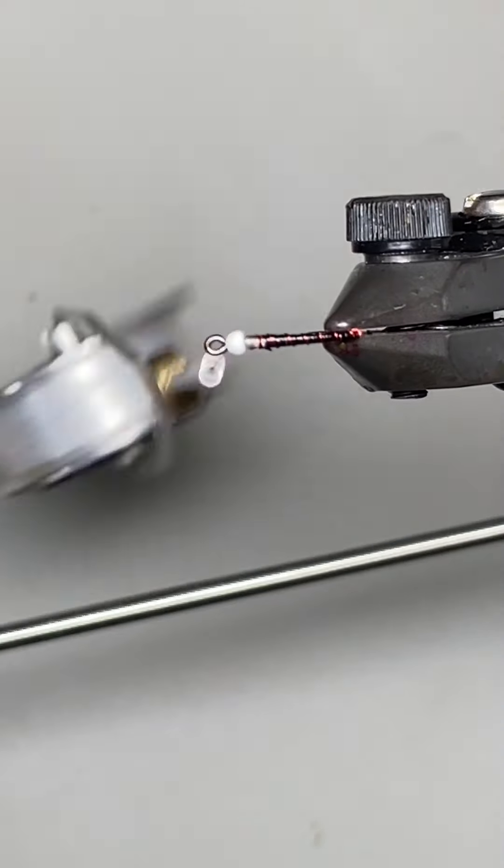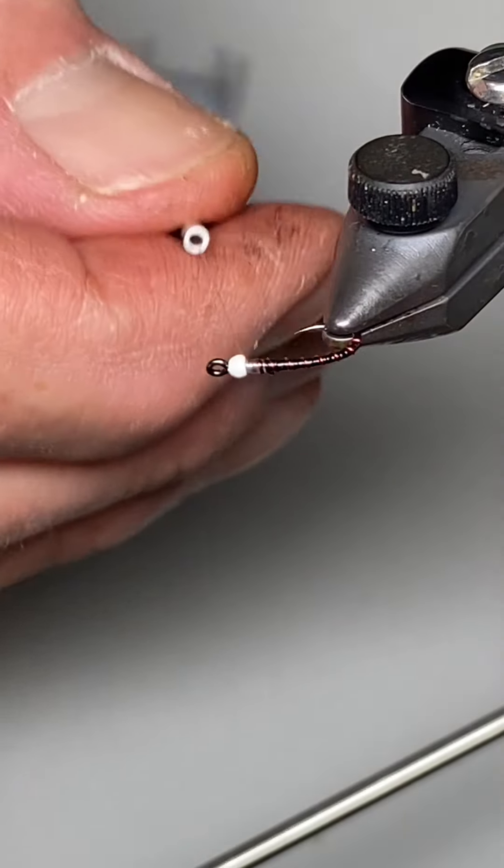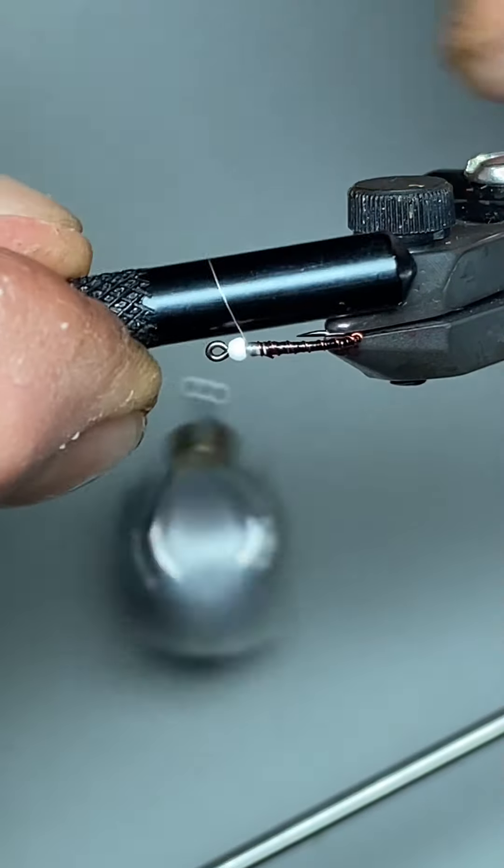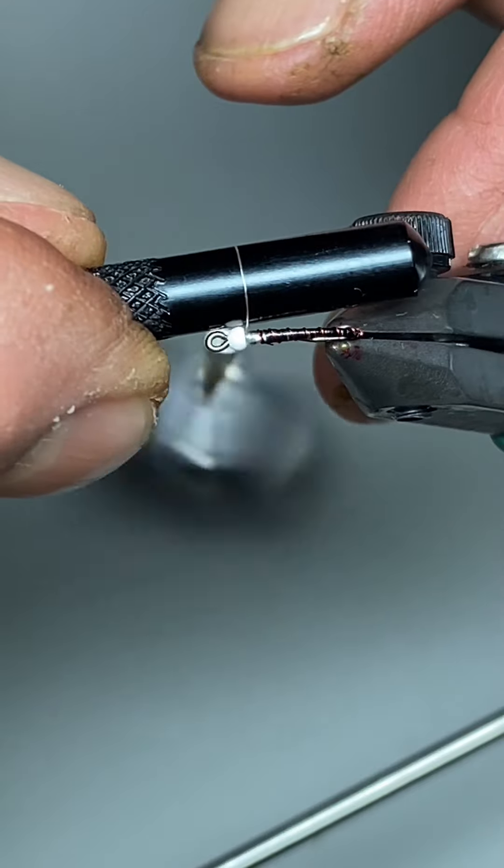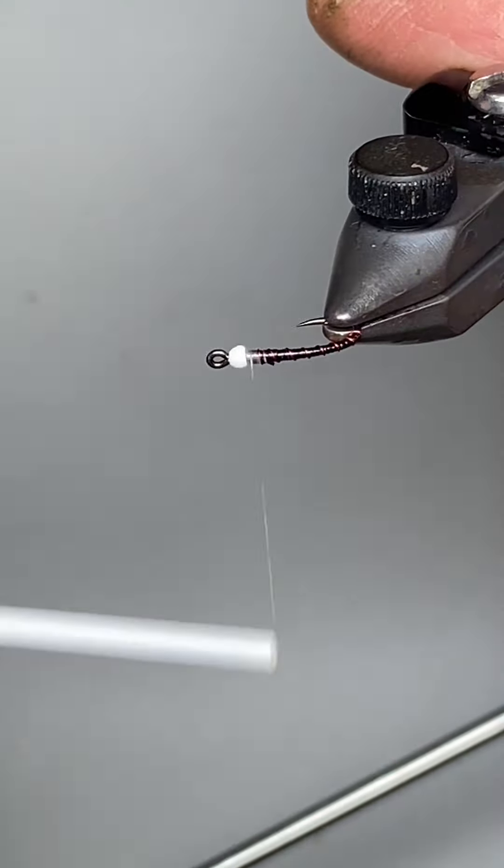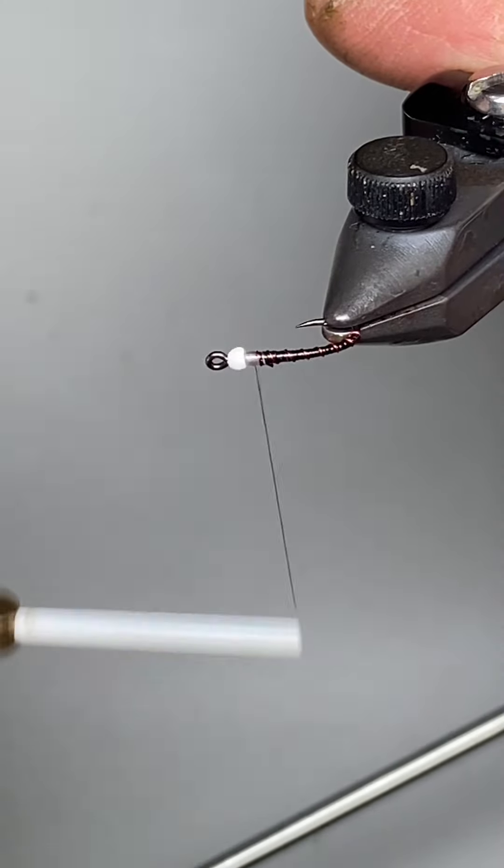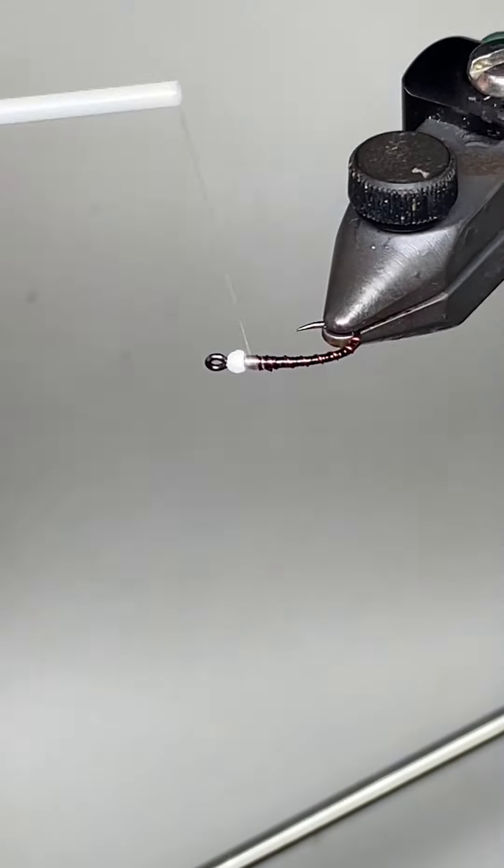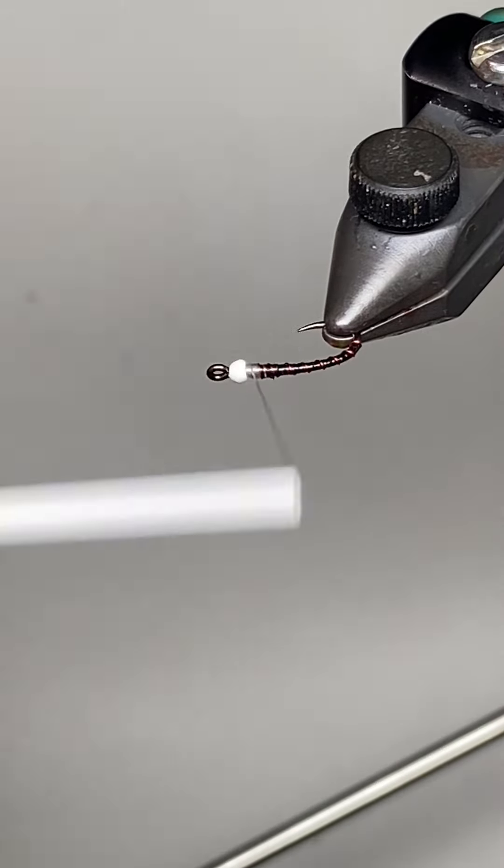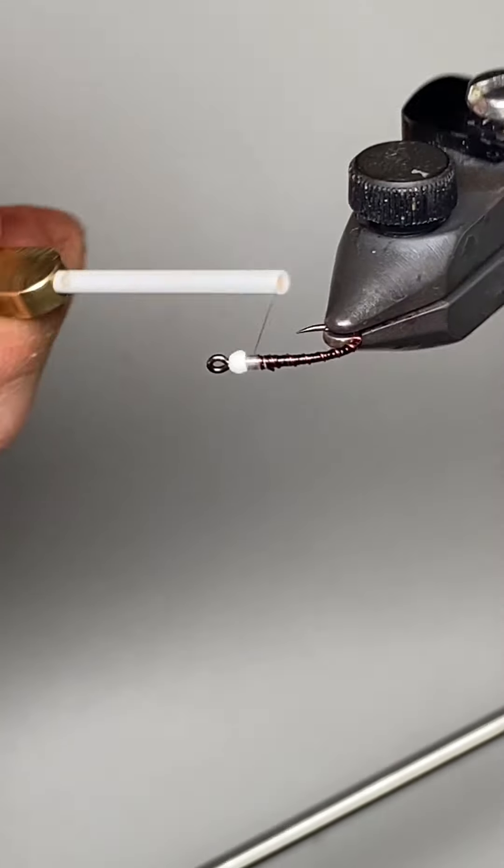Now when you go to do the thorax your wraps are important. So in order to get a nice, even, and neat thorax spin out your thread one more time. Get it nice and flat. And then when you finish that you want to make sure you're placing the thread exactly where you want it. So you're kind of covering any little holes and divots and you build up against the bead.